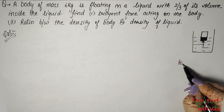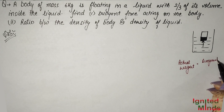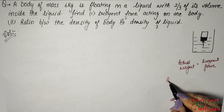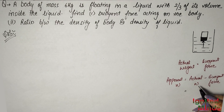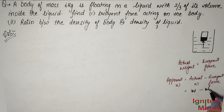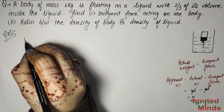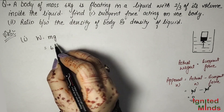So when floating, the actual weight is balanced by the buoyant force. That means apparent weight equals zero. So buoyant force equals actual weight, which equals Mg = 6 × 10 = 60 N.